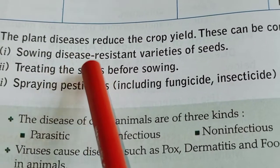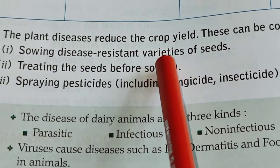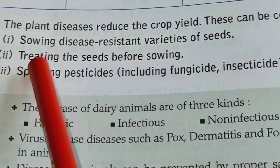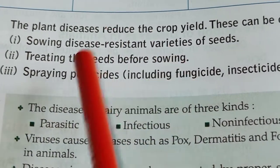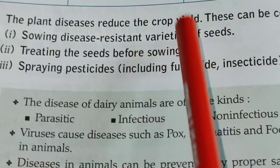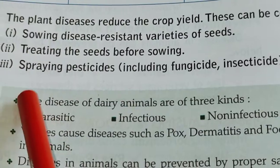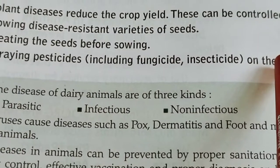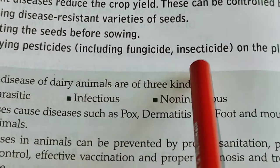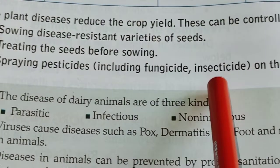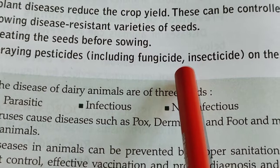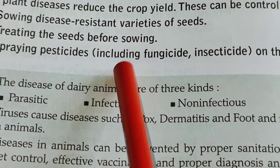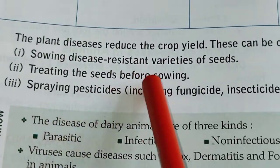Farmers must use disease-resistant varieties of seeds. They also have to treat the seeds before sowing, which is called seed treatment — this is very important. Finally, after sowing, spraying pesticides on the plants is necessary. Pesticides include fungicides and insecticides, and they kill the growth of fungus or other pests in the plant.